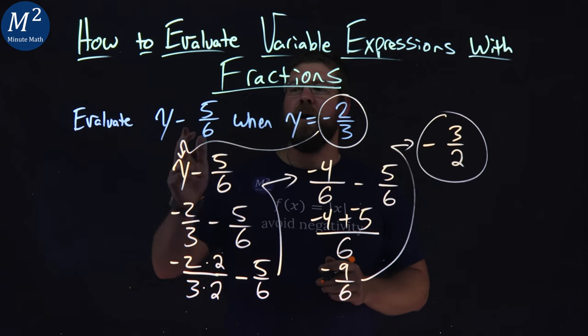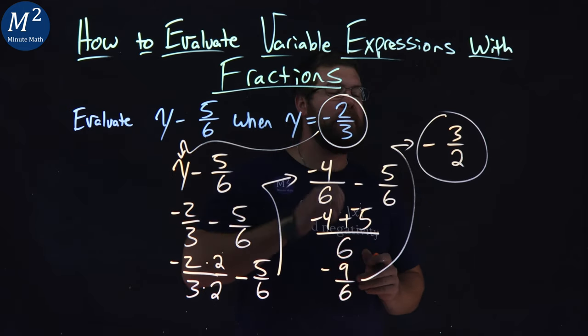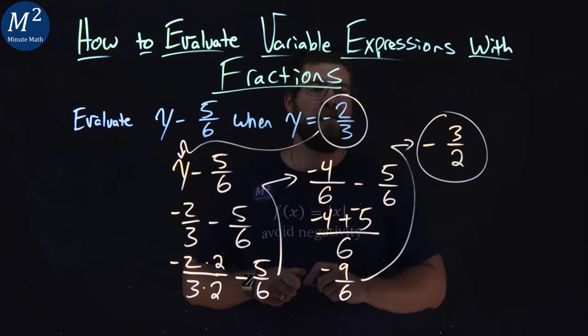We evaluated y minus 5 sixths when y equals negative 2 thirds, and we got negative 3 halves.